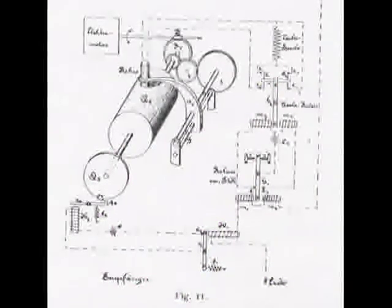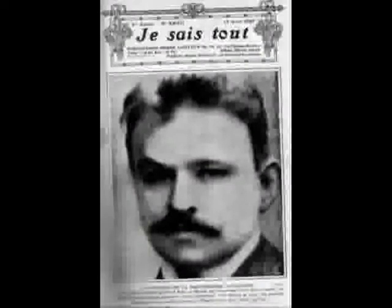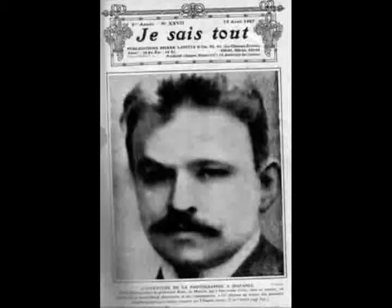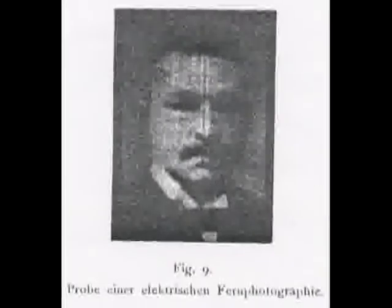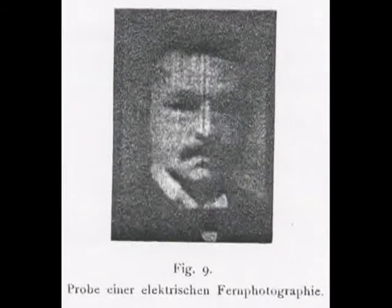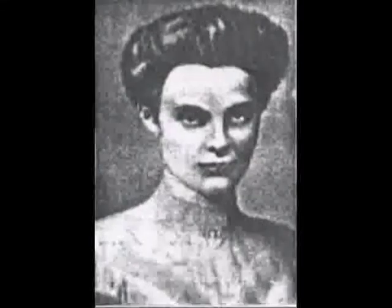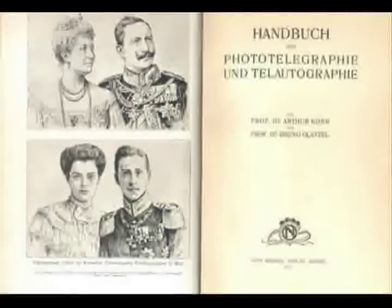This device scans a photo point by point using a piece of light-sensitive selenium semi-metal as a semiconductor to vary the current depending on the intensity of light in the photo. So, at the other end, a light moving over a point on a photosensitive paper becomes as bright as the point on the original photo. This new photo is then developed and is an exact copy of the original.